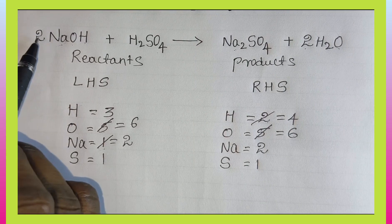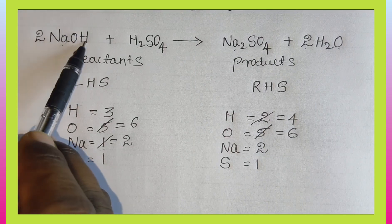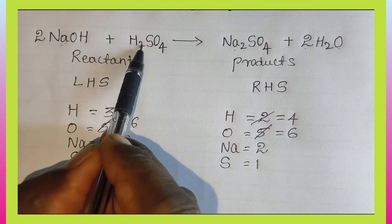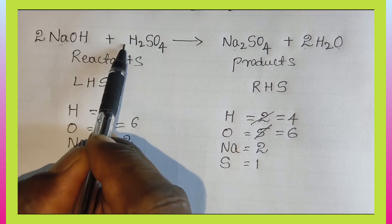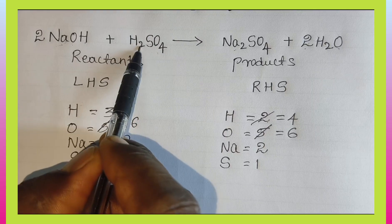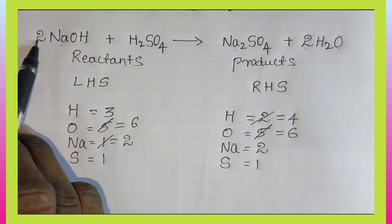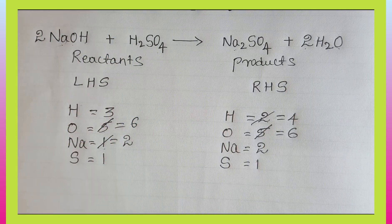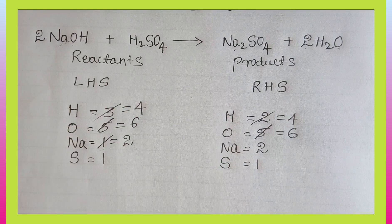Now count hydrogen. From 2×NaOH: 2 into H gives 2 hydrogen. Stoichiometric coefficient on H2SO4 is 1, so 2 into 1 gives 2 hydrogen from H2SO4. On the LHS: 2 plus 2 equals 4 hydrogen atoms total. On the RHS: 2×H2O gives 2 into 2 equals 4 hydrogen atoms. So both sides now have 4 hydrogen atoms.